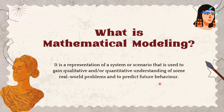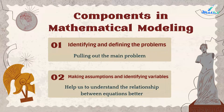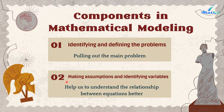In simple terms, we apply our mathematics knowledge into real world situations to solve problems. There are a few important components in mathematical modeling. Our first step is identifying and defining the problems, which means we need to pull out the main problem. The second step is making assumptions and identifying variables, which helps us understand the relationship between equations better.